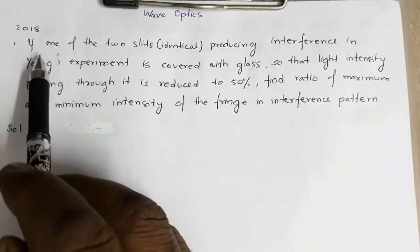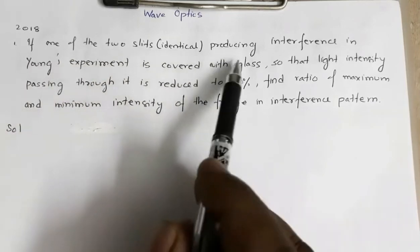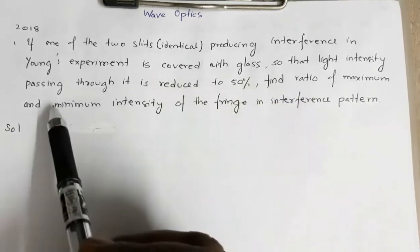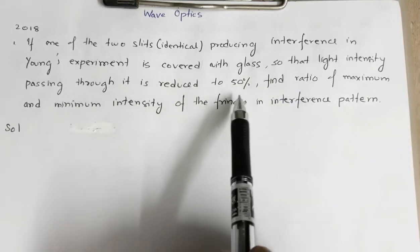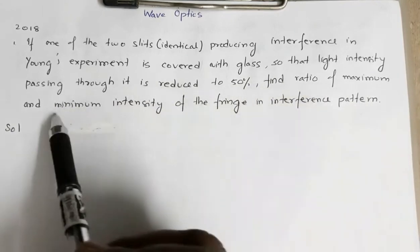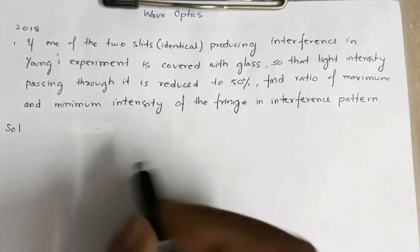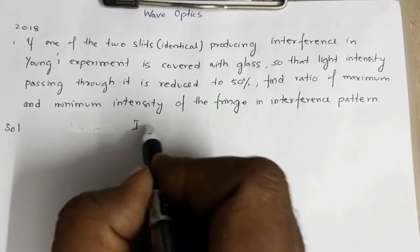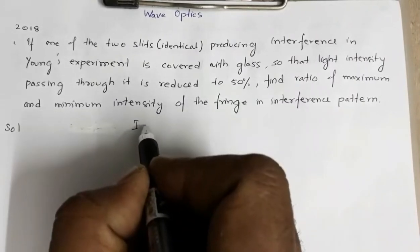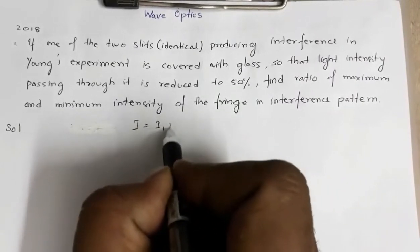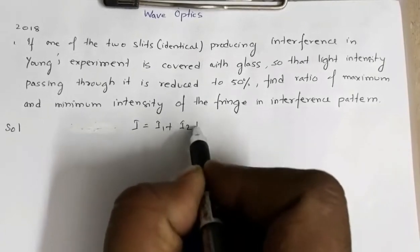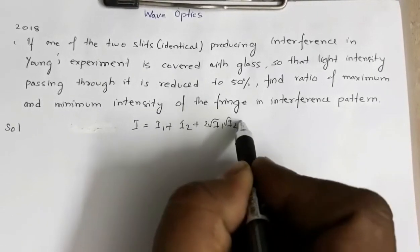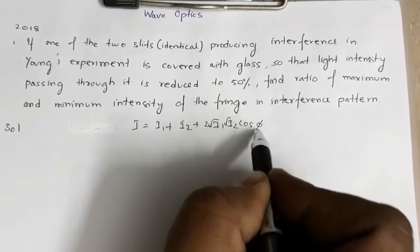The question reads: if one of the two identical slits producing interference in Young's experiment is covered with glass so that the light intensity passing through it is reduced to 50 percent, find the ratio of maximum to minimum intensity of the fringe. We know that the resultant intensity for two intensities i1 and i2 is given by: i = i1 + i2 + 2√(i1·i2)·cos φ,